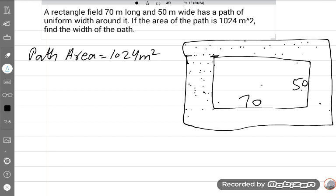This is also extra path. So we will suppose this extra path and extra length surrounding the rectangular field, we will suppose this X, X, X, X. This length is X, this length is X, this length is X, this length is X.